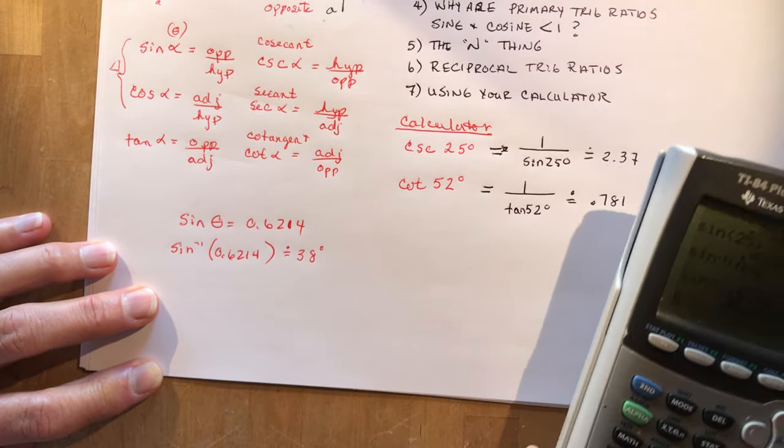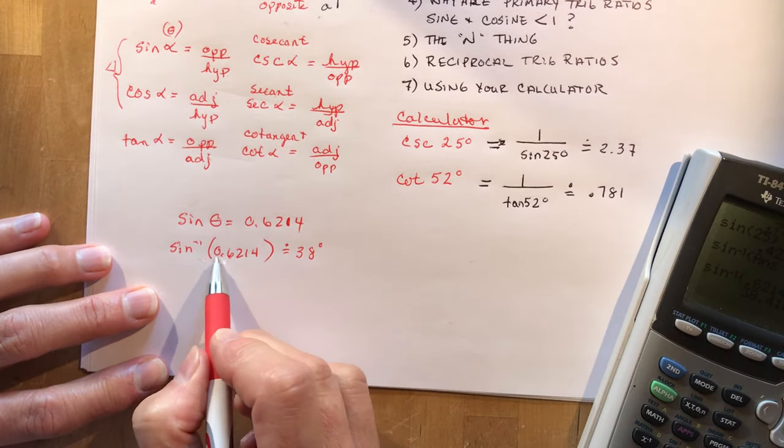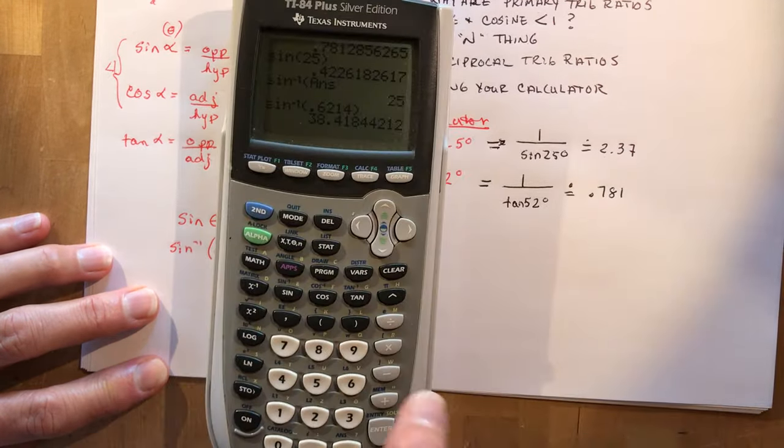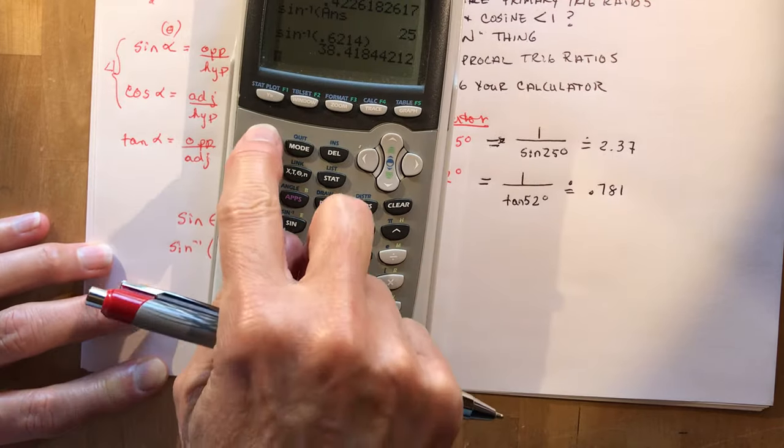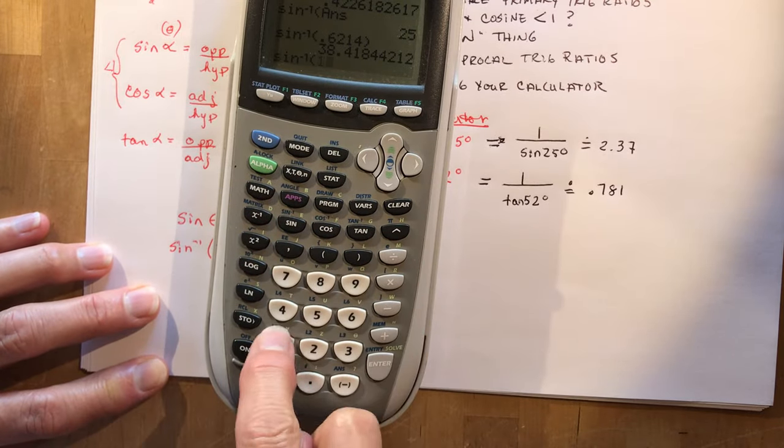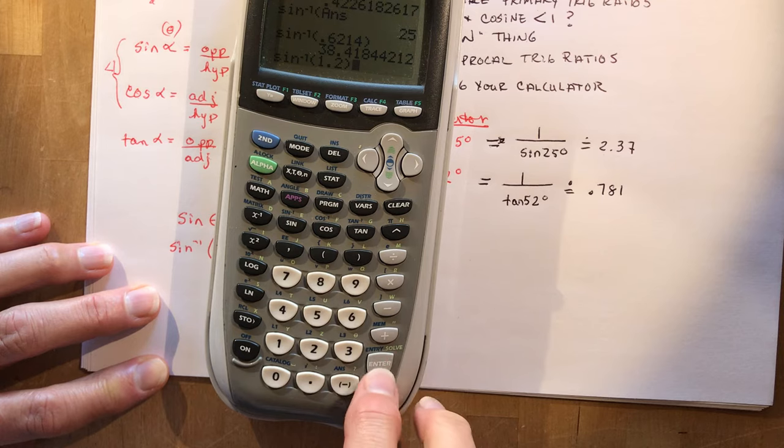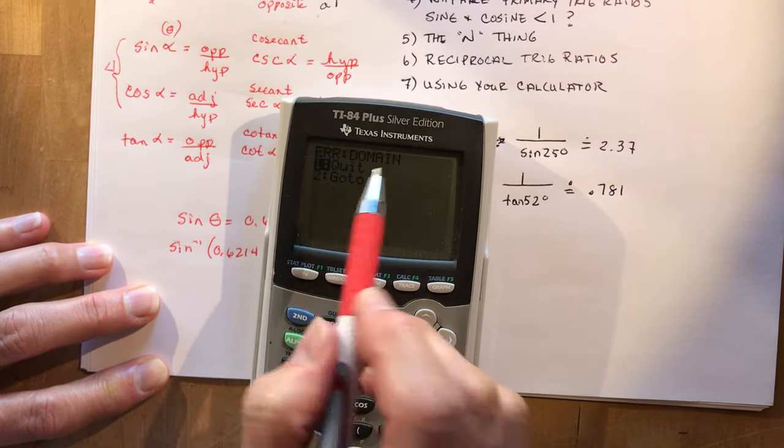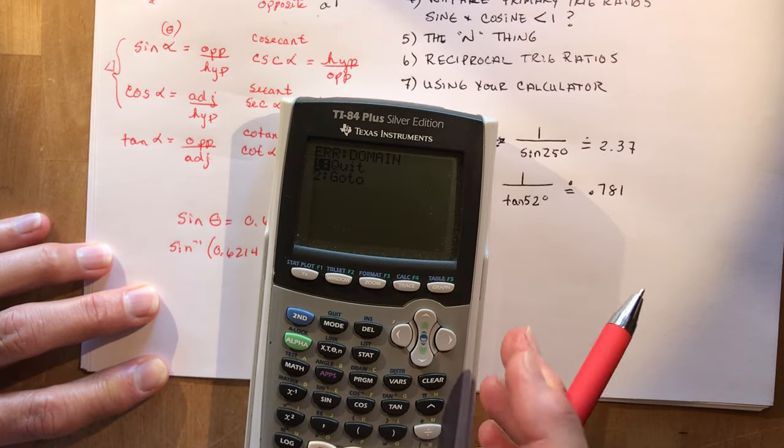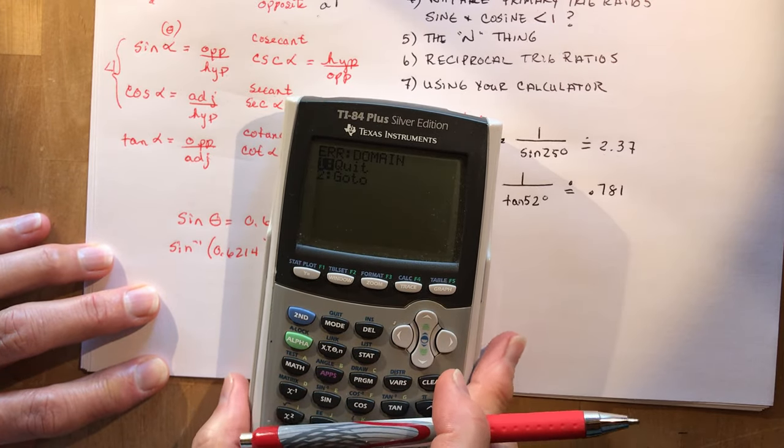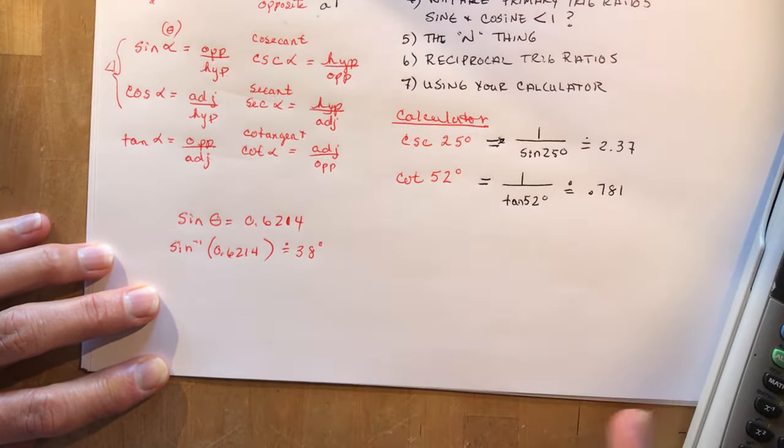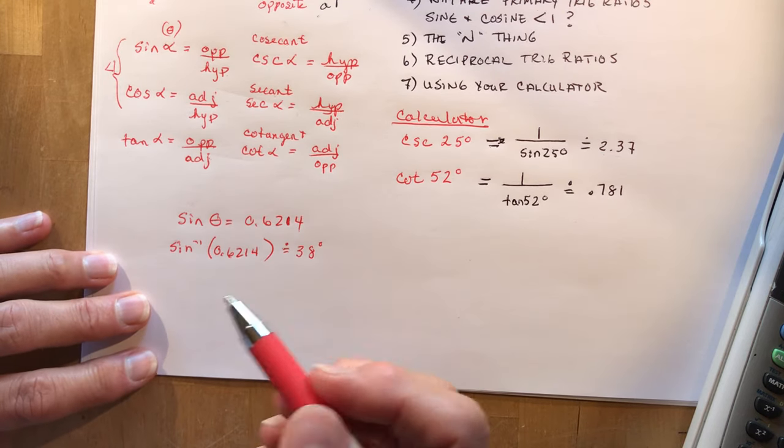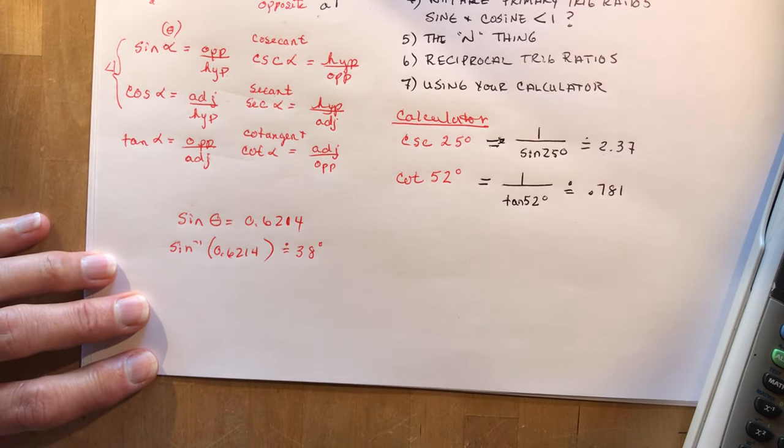Now remember what I said about these being less than, approximately 38 degrees, they always are less than 1. If you try to do sine negative 1, I'll show you what happens. Second sine of, say, 1.2, your calculator is going to, hopefully not blow up, but it does give you an error. It says quit, domain. You're using a number that doesn't have a sine value, because sine is always less than 1, just like cosine.